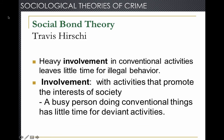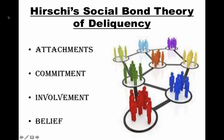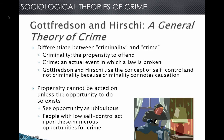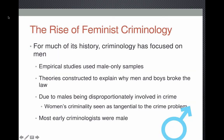The social bond theory from Travis Hirschi begins with attachments, commitment, involvement, and belief. The general theory of crime differentiates between criminality — the propensity to offend — and crime, an actual event in which the law is broken. The rise of feminist criminology emerged because for much of its history, criminology focused on men, with empirical studies using male-only samples and theories explaining why men and boys broke the law, as most early criminologists were male.